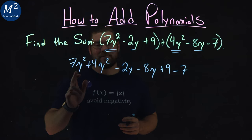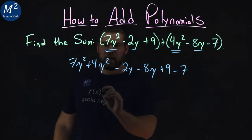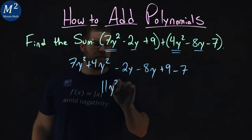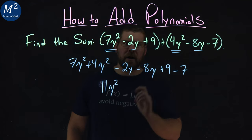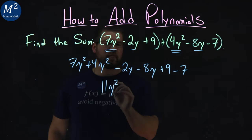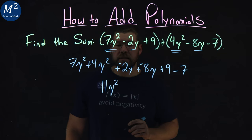7y² plus 4y² comes out to be 11y². Now I have a minus 2y and a minus 8y. The way I like to write this, I like to write them as plus a negative. Makes it a little easier to see.